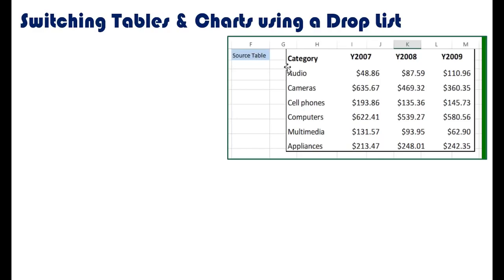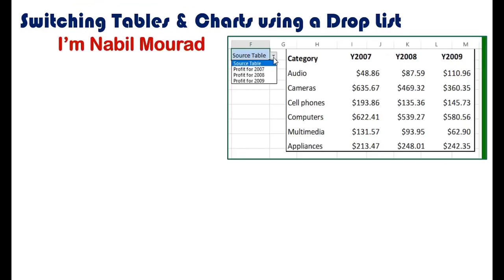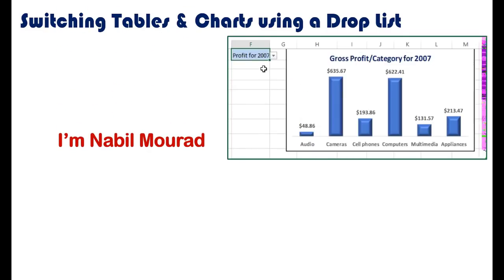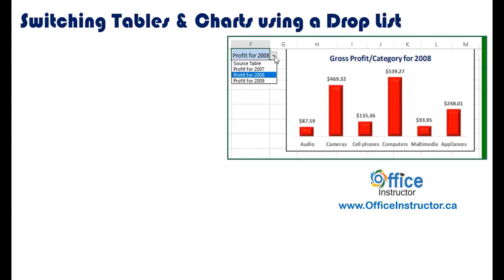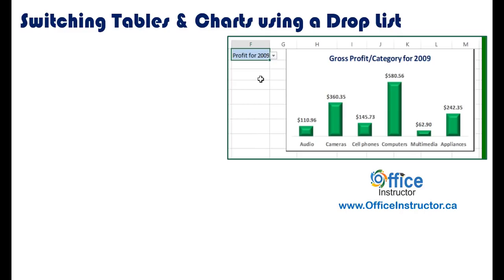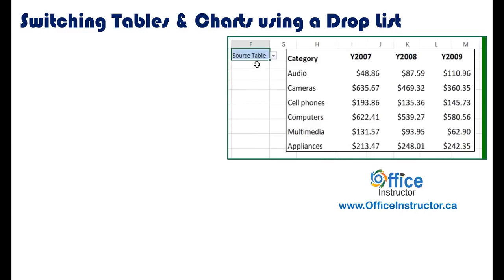Hi there. Copying and pasting can go far beyond creating an identical version of the source data. We can use copying and pasting to switch between the source table and multiple charts. I'm Nabil Murad. In our worksheet, we have the gross profit for each product category for each year. I would like to create a separate column chart for each year and be able to switch charts or even see the source table by selecting a different option from a drop list.